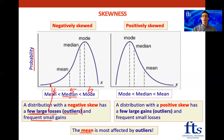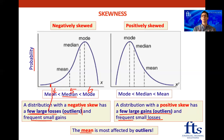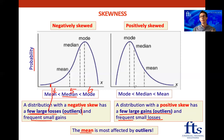The positively skewed distribution is the exact opposite: it has a few large gains as outliers and frequent small losses. Using the same stock market example - say returns over 10 years and one year the market is up 50% - that one large gain is going to affect the mean the most, pulling it upward. So the mean will be the greatest of the mode, median, and mean.